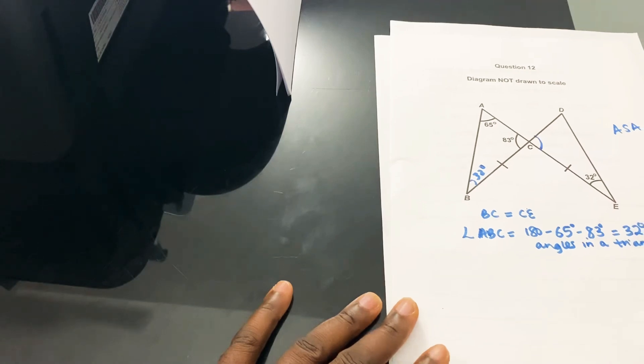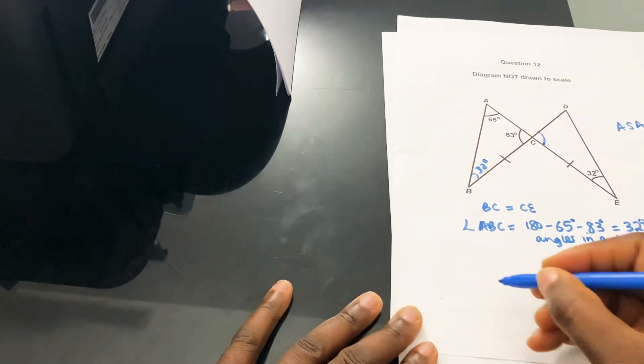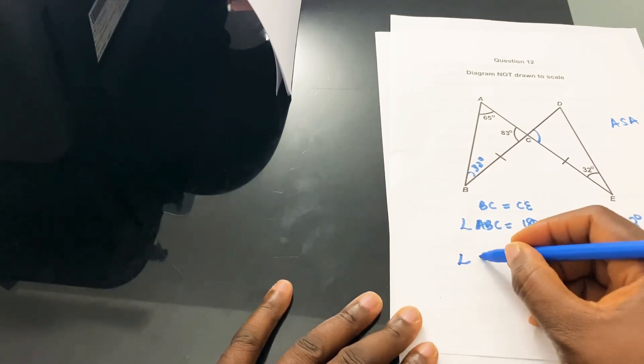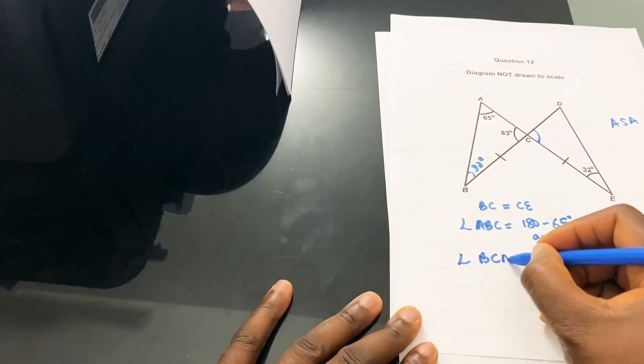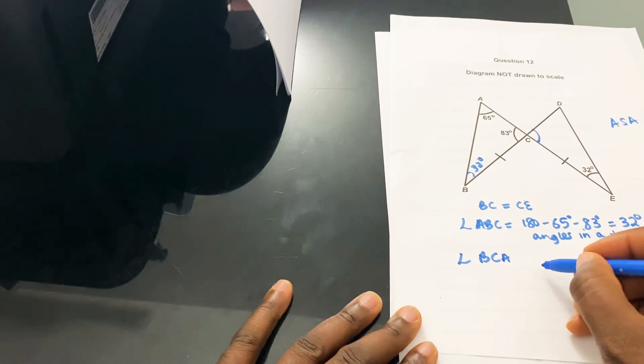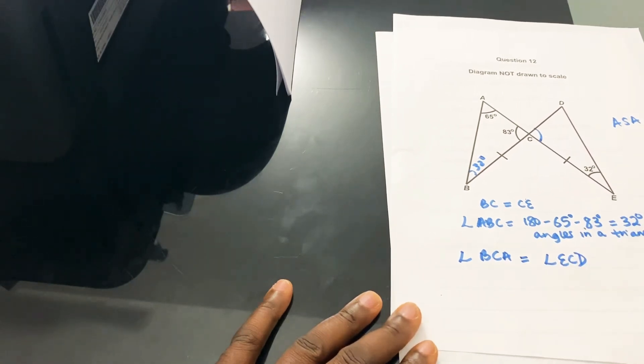Then we have this angle, this side, and this angle equal on both triangles. Could that angle be equal to the other one? Let's have a look. Angle BCA is equal to angle ECD. Why? Because they are vertically opposite. Those two are vertically opposite angles, which means they must be equal.